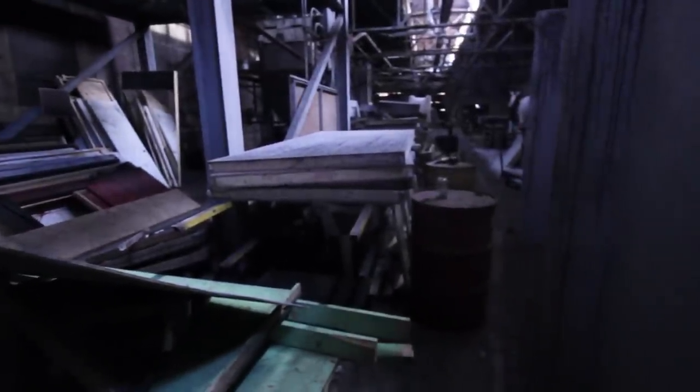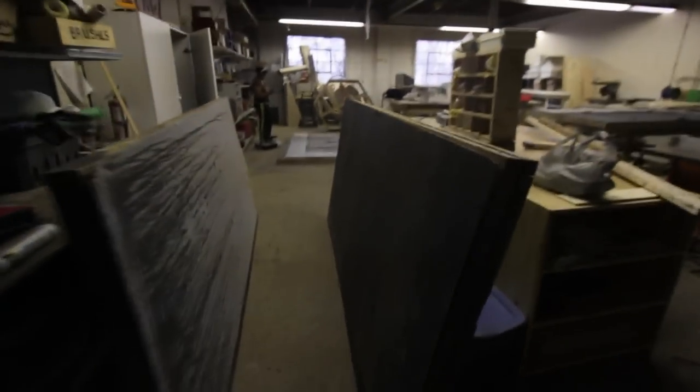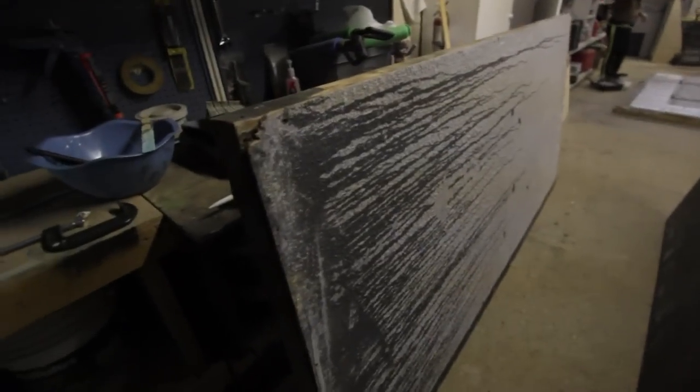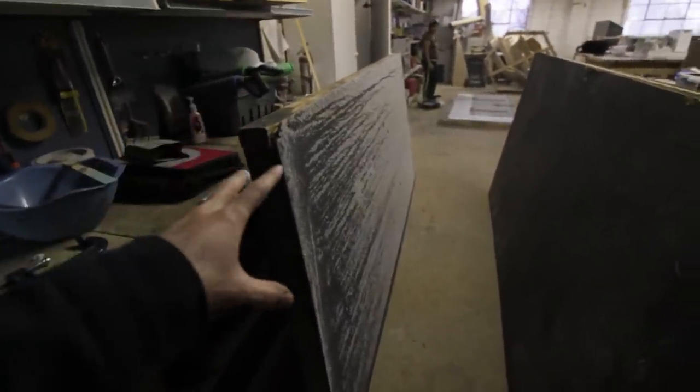Alright, so we're going to grab some panels. We're going to bring them back over to the workshop and we're going to start making some new stuff. So now that we're in the workshop and we've got the panels back here, we're going to be inspecting them and making sure that they're all secured down. There's no screws in it.